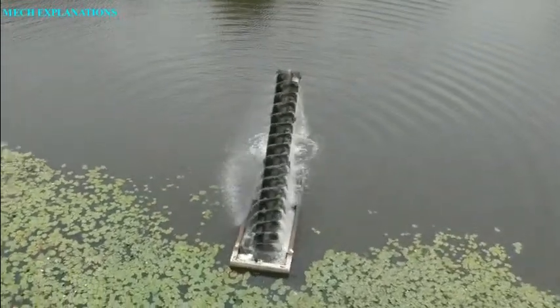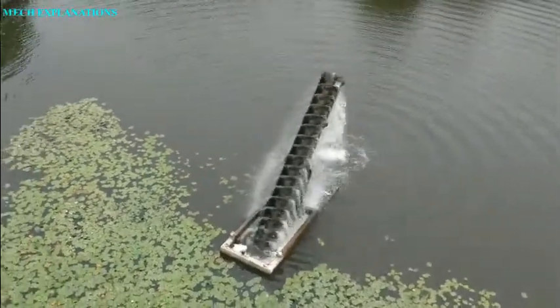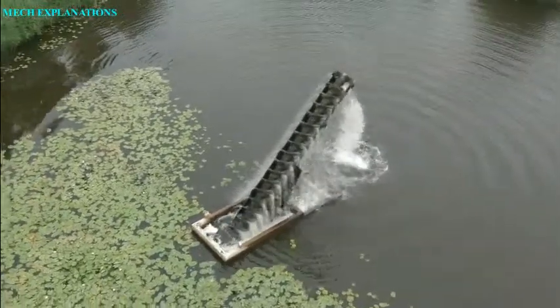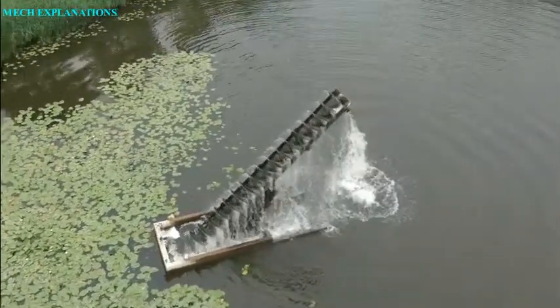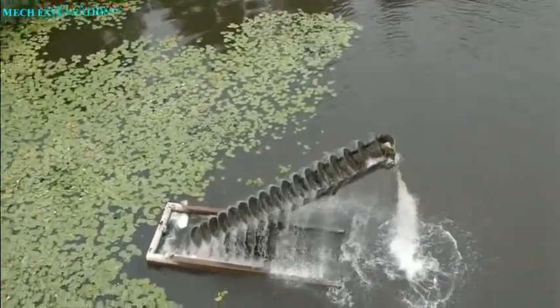Water is pumped by turning a screw-shaped surface inside a pipe. The Archimedes screw consists of a screw, a helical surface surrounding a central cylindrical shaft.